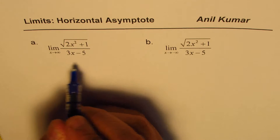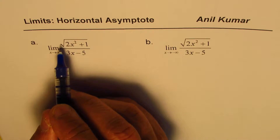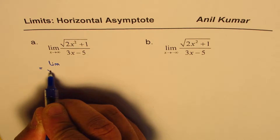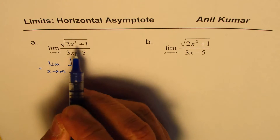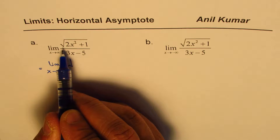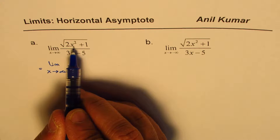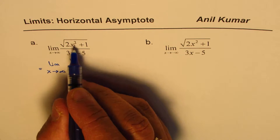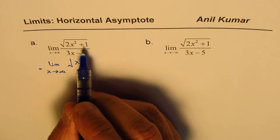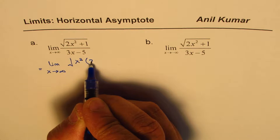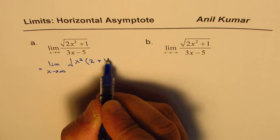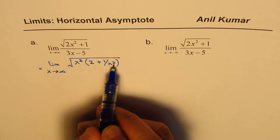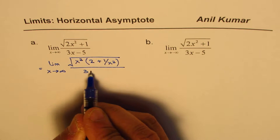Now let's figure out what is the limit of this function. We are given limit x approaches infinity for square root of 2x squared plus 1, divided by 3x minus 5. The first step, which is very critical, is that within the square root, I will take x squared common. When I take x squared common, I get 2 plus 1 over x squared under the square root. You divide both terms by x squared to get 2 plus 1 over x squared, then divided by 3x minus 5.